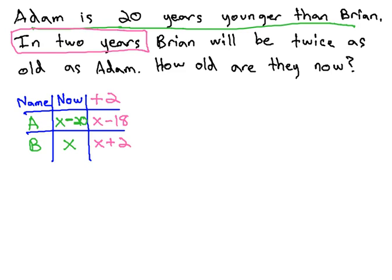Now, we can continue reading in the table. What happens in two years is Brian will be twice as old as Adam.